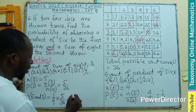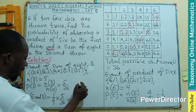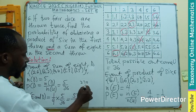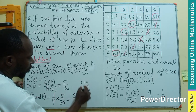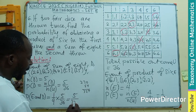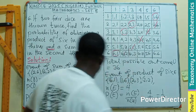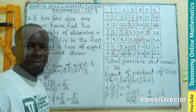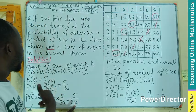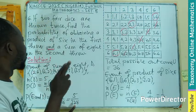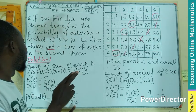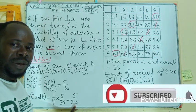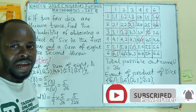So the probability of E and D equals the first probability, one over nine, multiplied by the second probability, five over 36. The numerator gives us five, and the denominator gives us nine times 36, which is 324. So the compound probability is 5 over 324. This is the probability of getting a product of six on the first throw and a sum of eight on the second throw respectively.